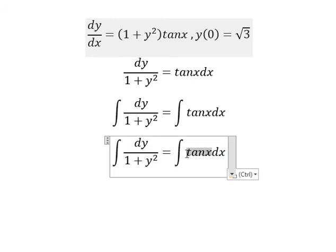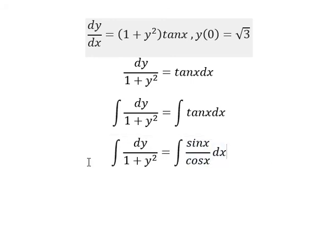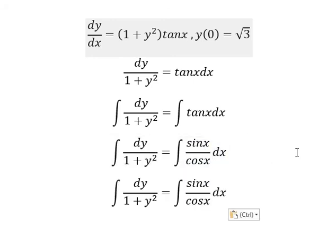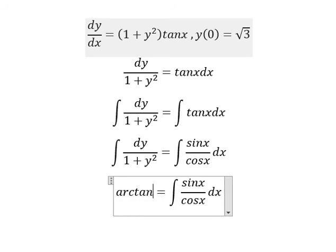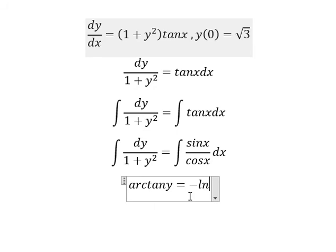So this one, that is about sin x over cos x. The integration of this one we have arctan of y, the integration of this one we have negative ln of the absolute value of cos x.